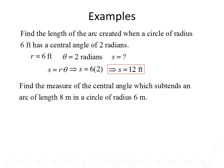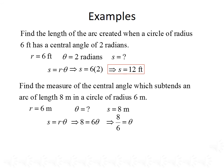For a second example, let's find the measure of the central angle which subtends an arc of length 8 meters in a circle of radius 6 meters. R equals 6 meters, S equals 8 meters, and we're solving for theta. Starting with S equals R times theta, we plug in: 8 equals 6 times theta. Dividing both sides by 6 gives theta equals 8 over 6, which reduces to 4 thirds radians.